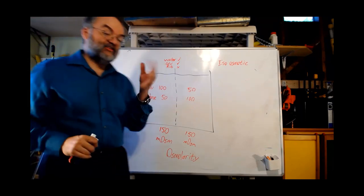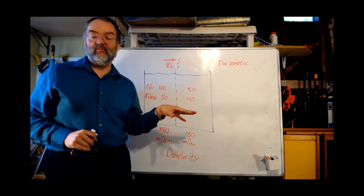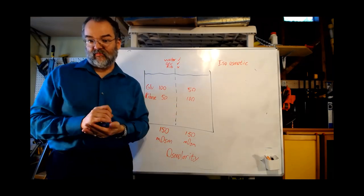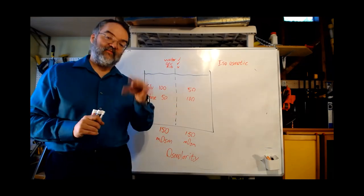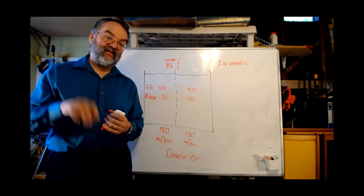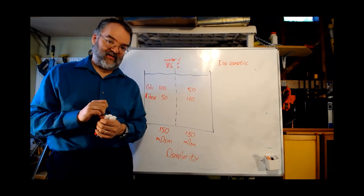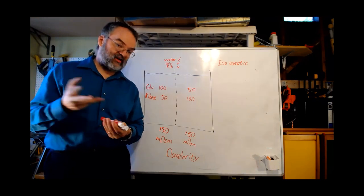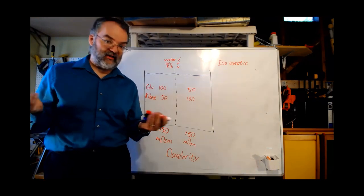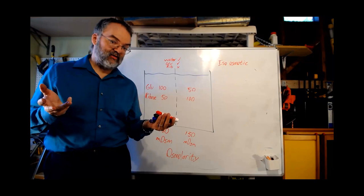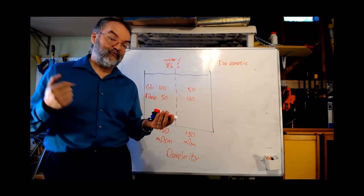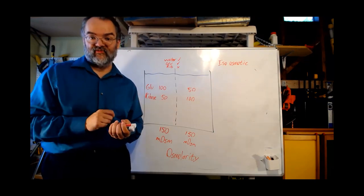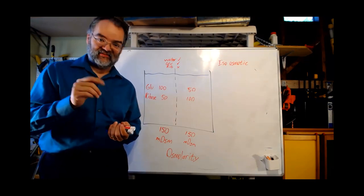Osmosis can get complicated and is notoriously confusing, so we'll have practice problems for it. We've now talked about diffusion and osmosis — the two main forms of passive transport. In the next section, we're going to talk about active transport: what happens when we force things to go in one direction rather than letting physics take its course, and what we have to do to make that happen.